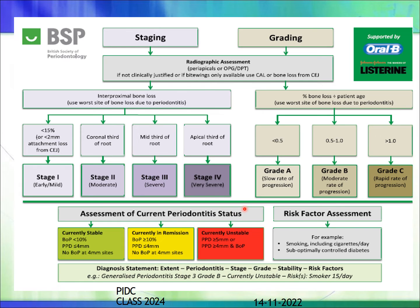After staging and grading, assess the current periodontal status. If the number of bleeding sites is less than 10% and pocket probing depth is less than or equal to 4 mm with no bleeding on probing at more than 4 sites, the patient is currently stable — just requiring a review. If bleeding on probing is present at more than 10% of sites but pocket probing depth is still less than 4 mm, the patient is currently in remission — requiring careful monitoring. The most important category is currently unstable: pocket probing depth of more than 5 mm with bleeding on probing at almost all sites, indicated as a red-flag condition.